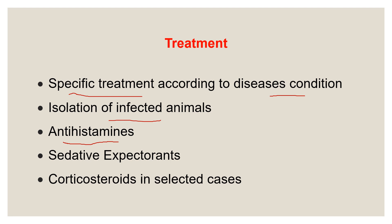If there is harsh and painful cough, give a sedative expectorant. The expectorant increases the secretion of mucus and liquefies dry mucus, making it easier for the animal. In some cases, corticosteroid treatment is required. Remember, when you give corticosteroid treatment, give an umbrella of antibiotics, because corticosteroids decrease the immunity of the animal. When immunity decreases, there are chances that viral or bacterial infection may spread. So if there is viral or bacterial infection, please be careful in giving corticosteroids. When corticosteroids are required, give antibiotics.